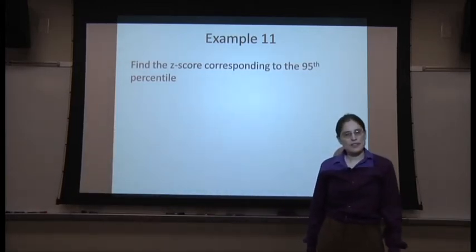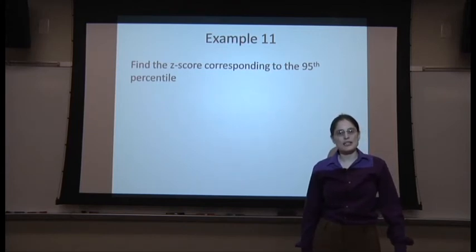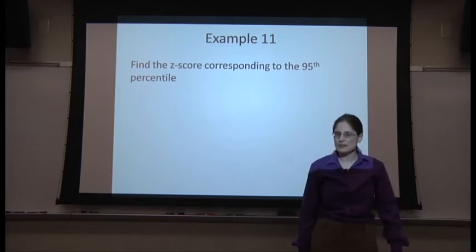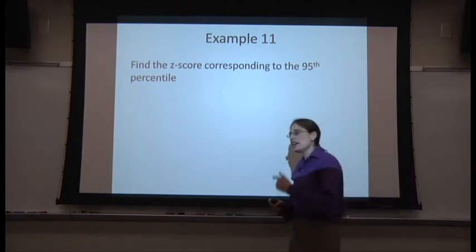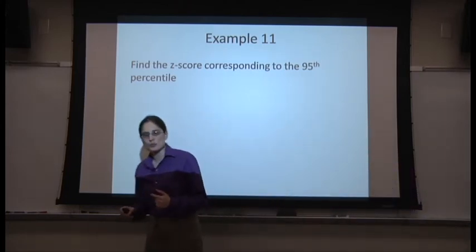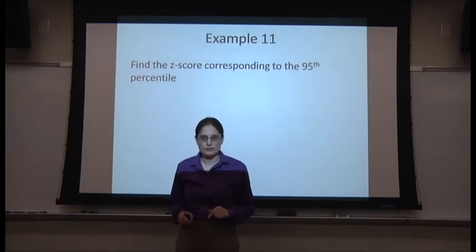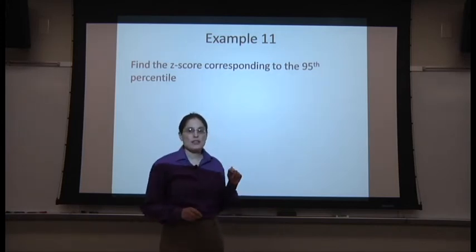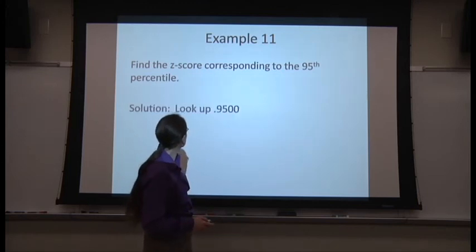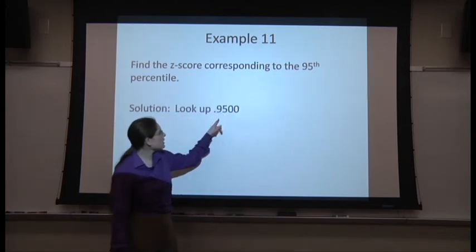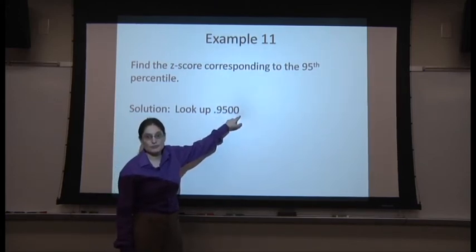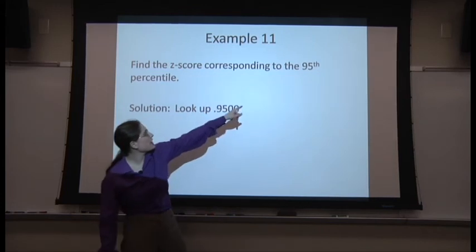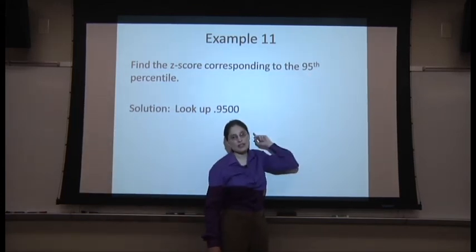Now, find the z-score corresponding to the 95th percentile. Wait, what's a 95th percentile? Percentile, right. That means 95% of the group is below you. So 0.95 of the group is below you. We're going to look up the number 0.9500 because we converted 95% into a decimal.